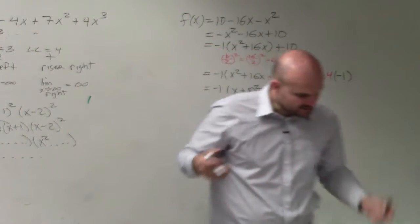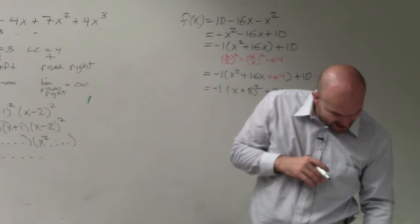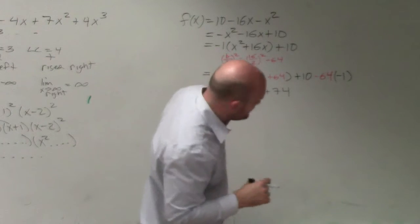So now we completed the square. Now it's in vertex form. And it says, describe the graph of each function and support your answer graphically.